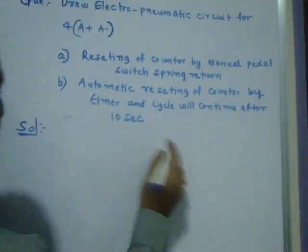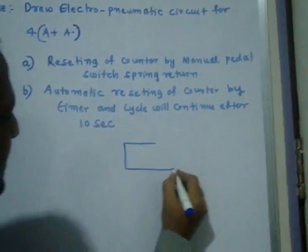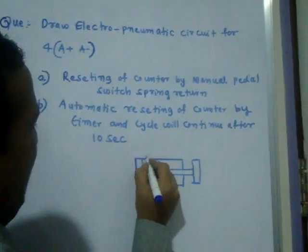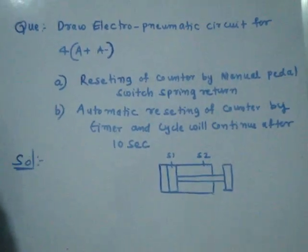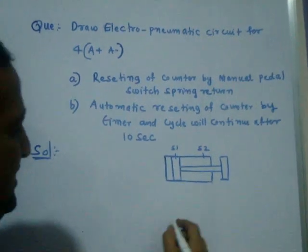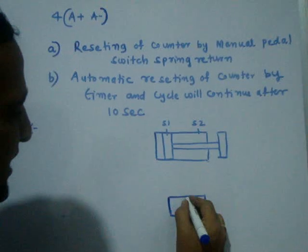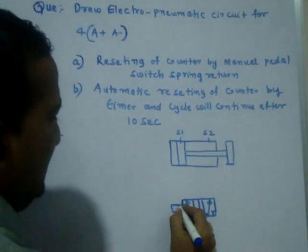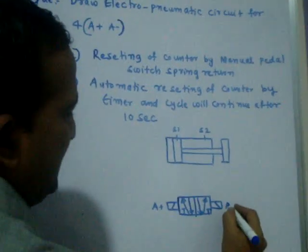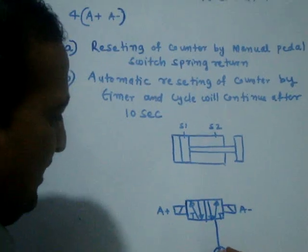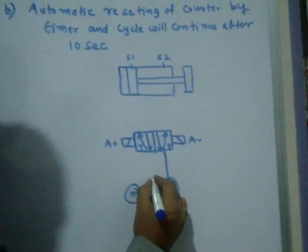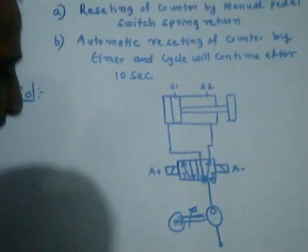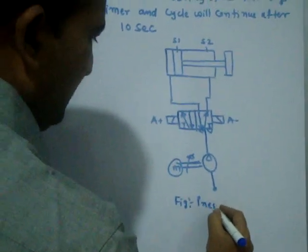For the pneumatic circuit, the piston and cylinder — this is called the actuator — is required. S1 is a sensor, S2 is a sensor — a reed sensor, magnetic sensor, or proximity sensor. Then a 5 by 2 valve is required to control the motion of the piston. This is the symbol of the solenoid valve — this is A plus, this is A minus. There is also a compressor, a motor, and two muffler exhausts. This is the basic pneumatic circuit.